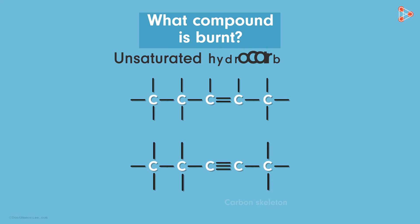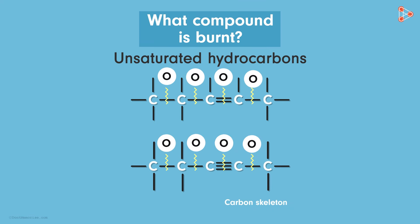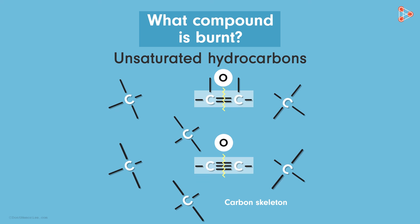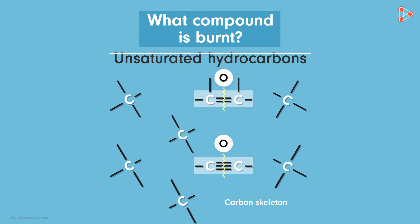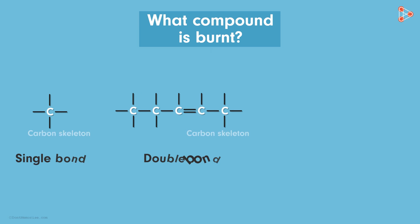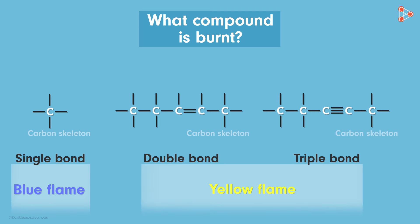However, in case of unsaturated hydrocarbons, the same number of oxygen atoms will be unable to break the carbon bonds easily. It's because the efforts needed for breaking double or triple bonds will be greater. So it is the presence of single or double and triple bonds between the carbon units that result in blue or yellow flames respectively.